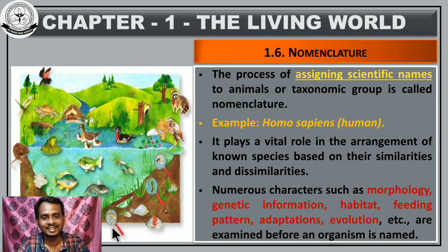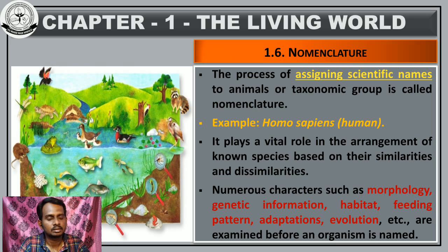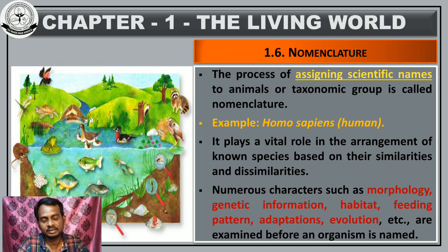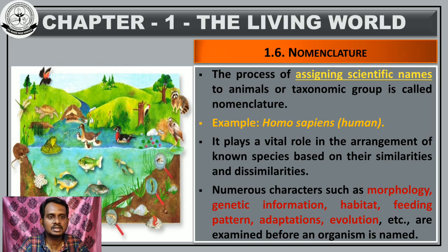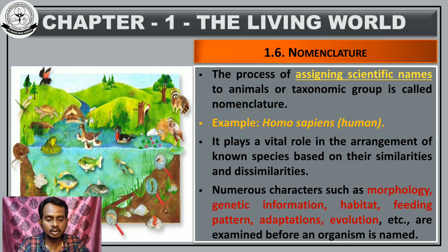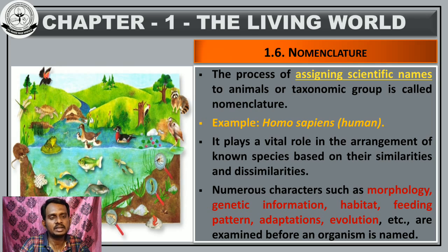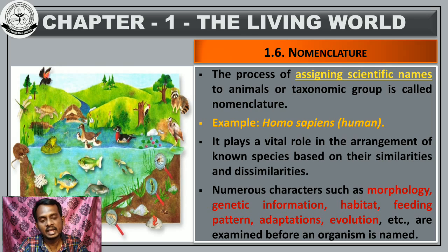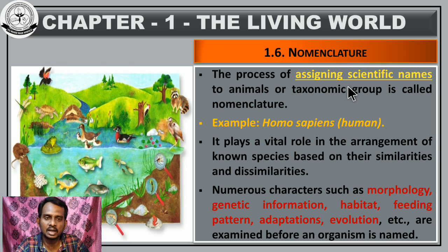Welcome back students. In our previous class we completed taxonomical hierarchy — what is kingdom, what is phylum, what is class, what is order, then family, genus, and species. We also covered what are the examples for this taxonomical hierarchy and who introduced it. In this class we are going to learn nomenclature. Nomenclature means it is a process of assigning the scientific names to animals or to a taxonomical group.